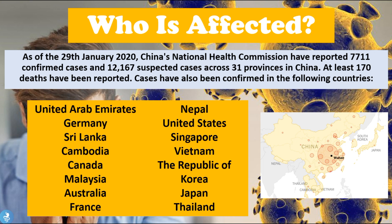So who is currently affected by this 2019 coronavirus outbreak? As of January 29th, 2020, China's National Health Commission reported 7,711 confirmed cases and 12,167 suspected cases across 31 provinces in China, with at least 170 deaths. Cases have also been confirmed in the UAE, Germany, Sri Lanka, Cambodia, Canada, Malaysia, Australia, France, Nepal, the United States, Singapore, Vietnam, the Republic of Korea, Japan, and Thailand.